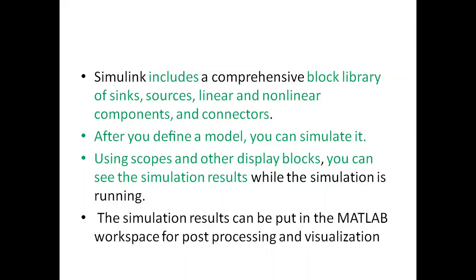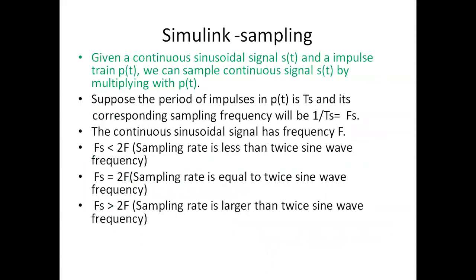Now we will learn how to apply the sampling theorem using Simulink. Given a continuous sinusoidal signal S and an impulse train P, we can sample the continuous time signal S by multiplying it with P. The sampling is a process that converts a continuous time signal to discrete. The sampling frequency Fs equals 1 divided by Ts. We have three cases: Fs less than 2F, Fs equal to 2F, and Fs greater than 2F. We will analyze all cases in our program.